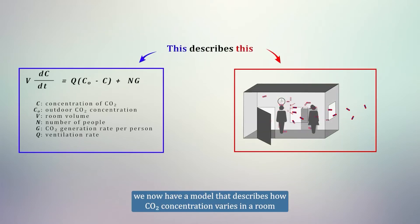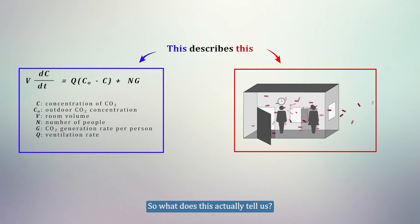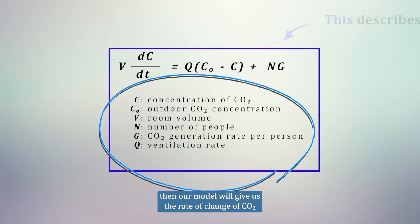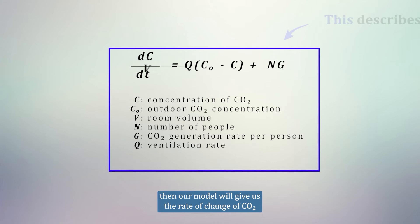As we saw in part 1, we now have a model that describes how CO2 concentration varies in a room. So what does this actually tell us? Well, it tells us that if we know all the variables listed here, then our model will give us the rate of change of CO2.